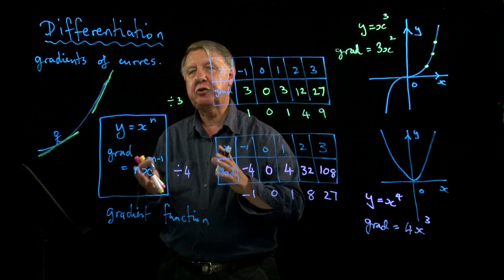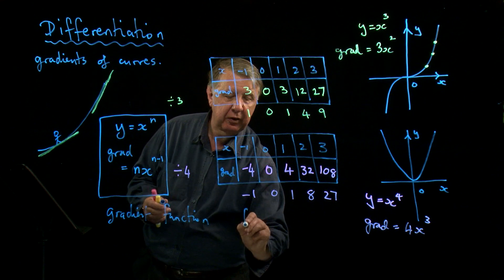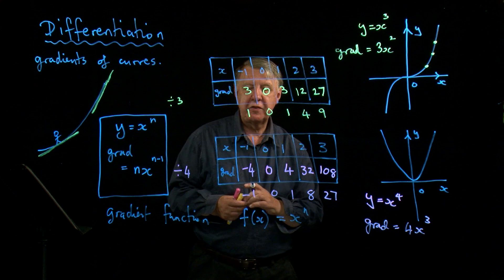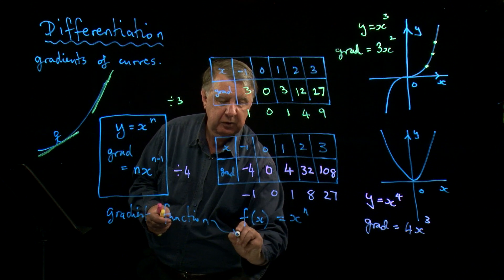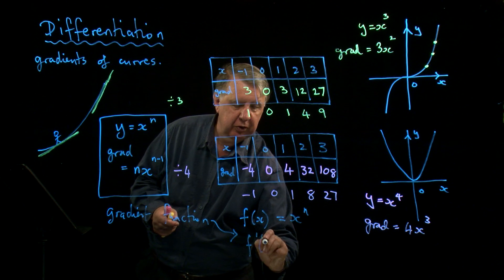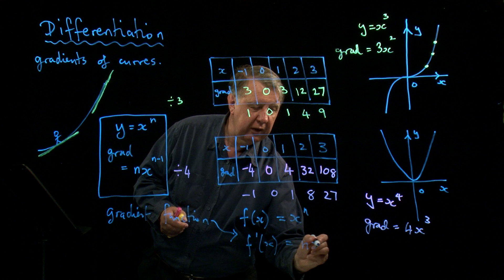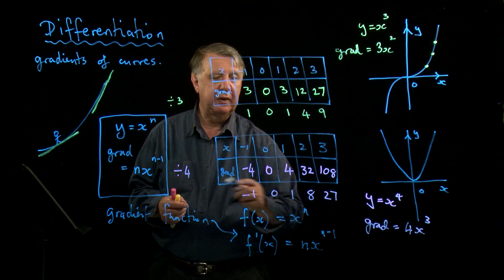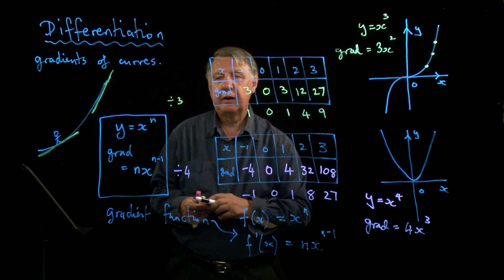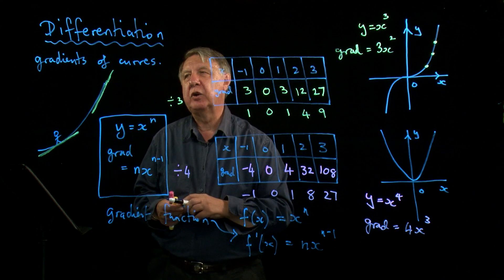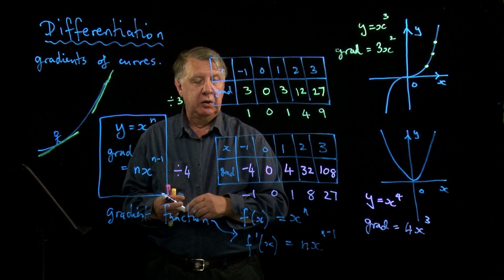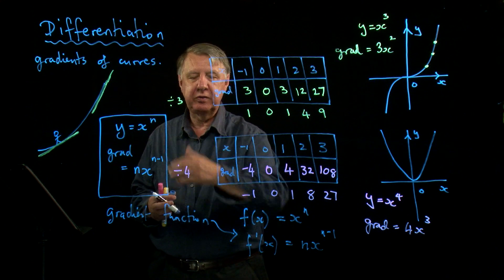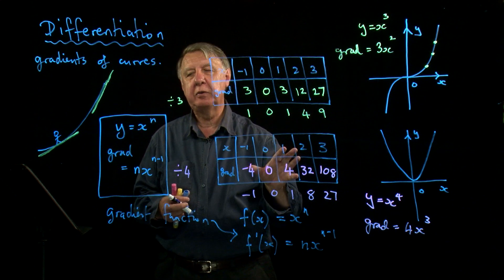If I'm using my function notation, so if I use function x notation for x to the n, then there is a symbol for the gradient function. It's f with a dash. So we would say that f dashed x, the gradient function, is nx to the n minus 1. And like everything in mathematics, there's always another way of writing it. And in our next lesson, we will look at the, in a sense, the original notation for this process of differentiation. And we'll look at this in a little bit more detail.